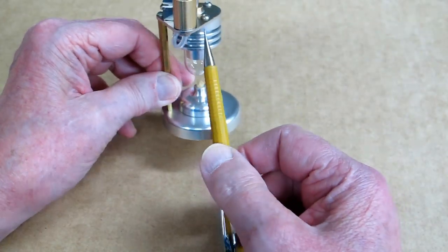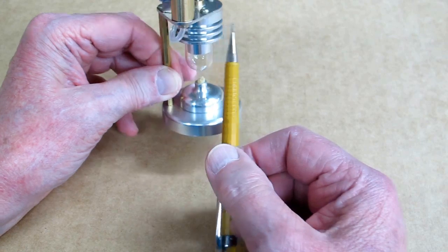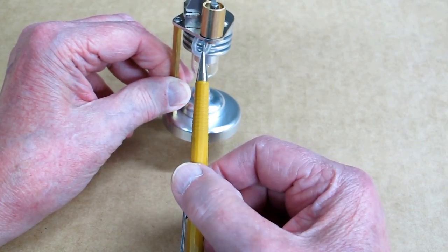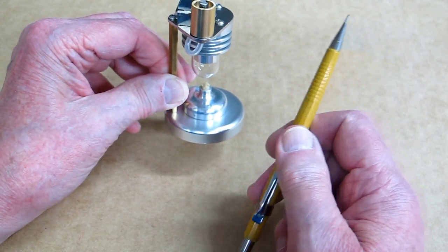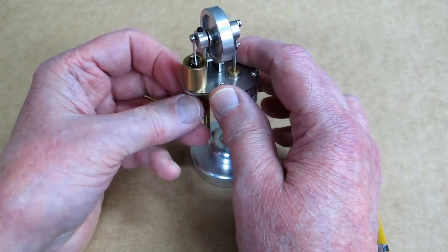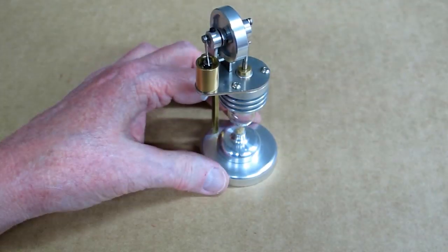This tube just pushes into this upper part of this heat exchanger and into the bottom end of this cylinder for the power piston, and it's just a push fit. There's no barb or anything for it to go over.